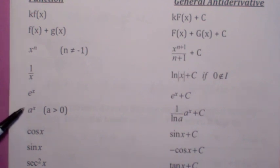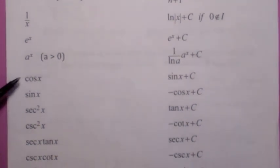The most general antiderivative of a to the x would be one over ln of a times a to the x plus C. These are all your trig differentiation rules in reverse.